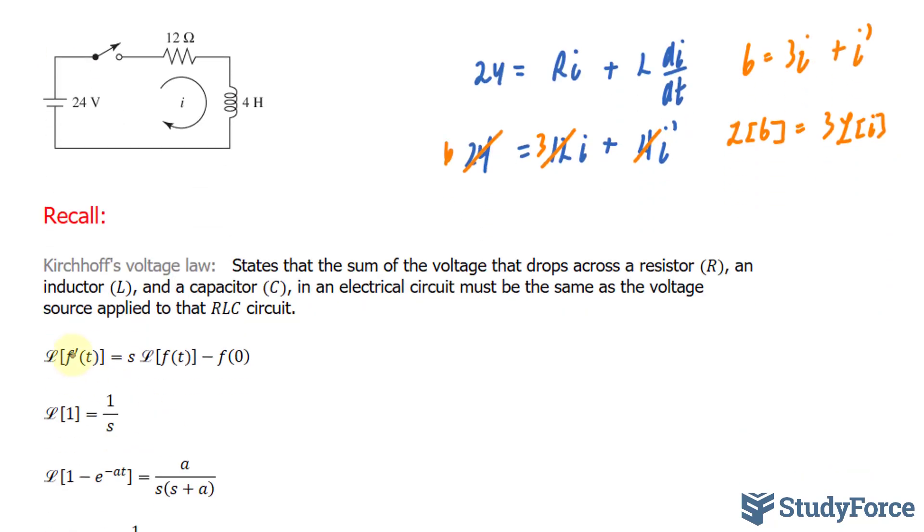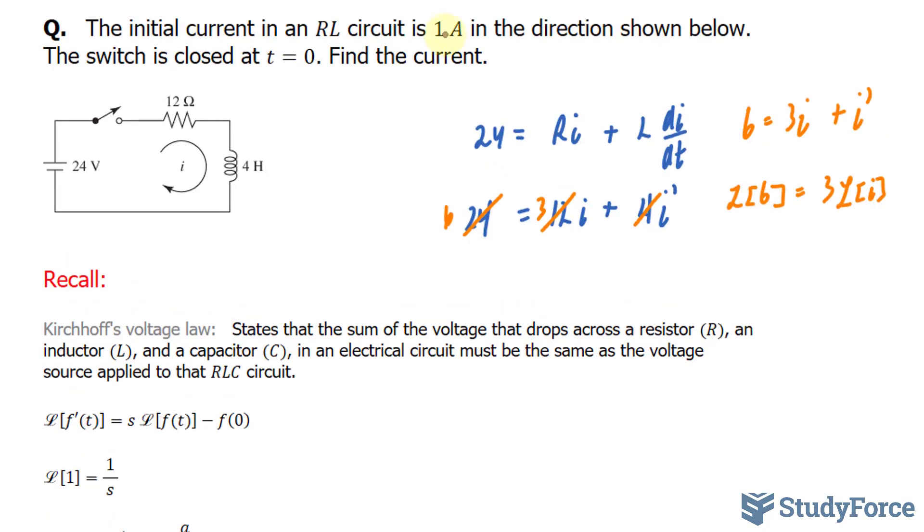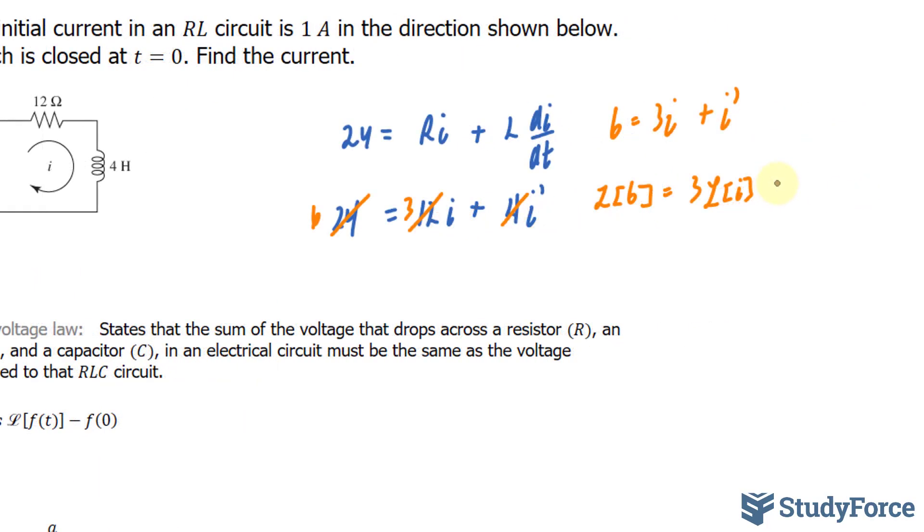For that, I'll use this relationship where the Laplace transform of a function, its derivative, is equal to s times the Laplace transform of, in our case is I, minus I at 0. And we're told what that is, it is equal to 1. See how it says initial current? So let me show you what I mean. 1 plus s times the Laplace transform of I minus the current at time 0, which in my case is equal to 1, minus 1.